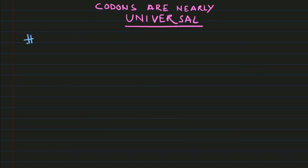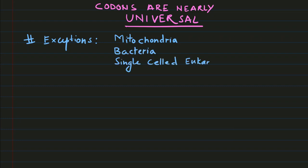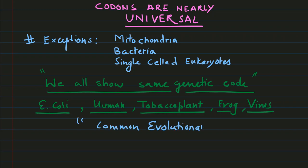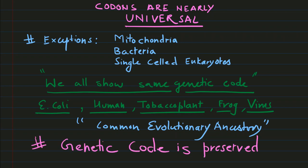The next important point is codons are nearly universal except for a few mitochondrial genes, bacteria, and single-cell eukaryotes. We all show the same genetic code. Whether it's E. coli, human, tobacco plant, frog, or viruses, we all have the same genetic code. That means we have common evolutionary ancestry and the genetic code is preserved throughout generations.